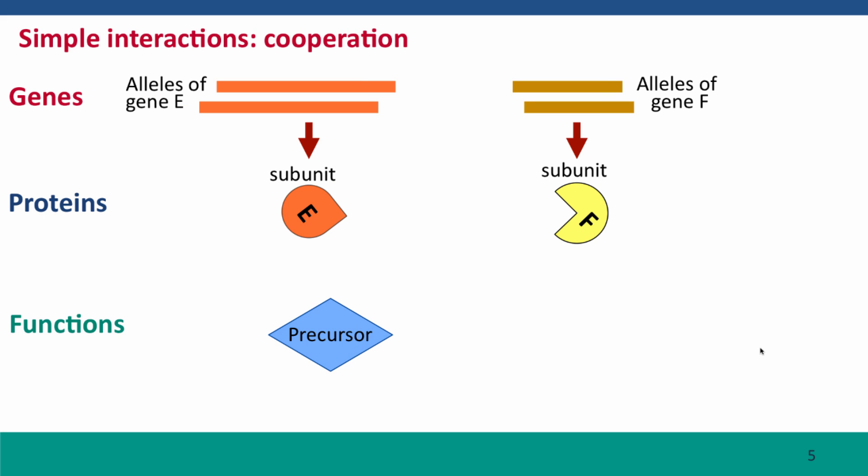Here's kind of a reciprocal process, the flip side of redundancy, and that's cooperation. Here's a situation where, in order to convert the precursor to the product, you require the products of two genes working together. This is very common. Many reactions are catalyzed by an enzyme that consists of subunits coded by two separate genes, as we're indicating here. So gene E produces subunit E, and gene F produces subunit F, and together they convert the precursor into the product.